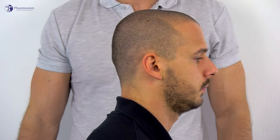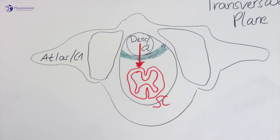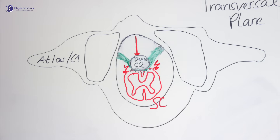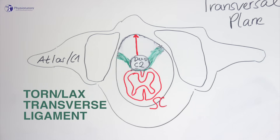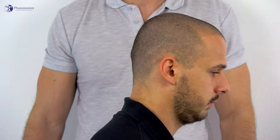In the forward flexed position voluntarily assumed by the patient, forward sliding of the Atlas results in a decrease in the space available for the spinal cord and an increase in the atlanto-dens interval. By the posterior translation of the occiput and the Atlas, the anterior subluxation is reduced and the space available for the cord is increased.